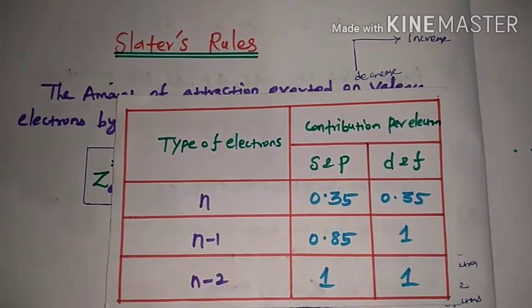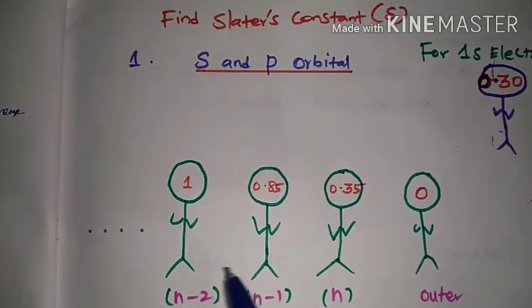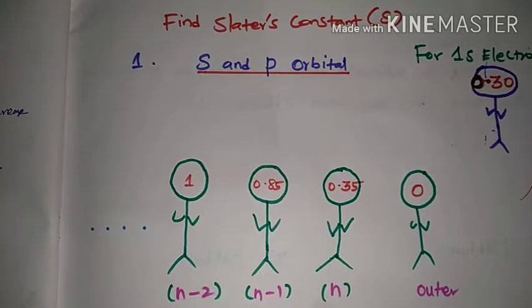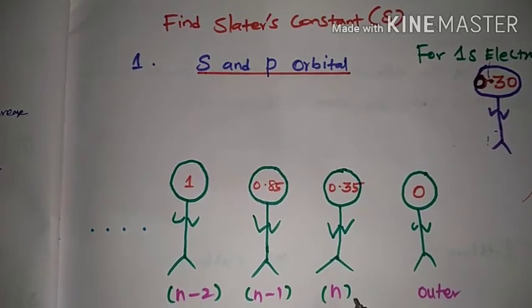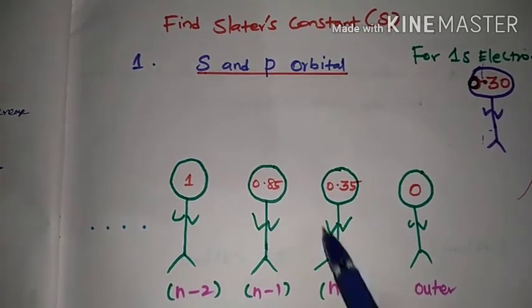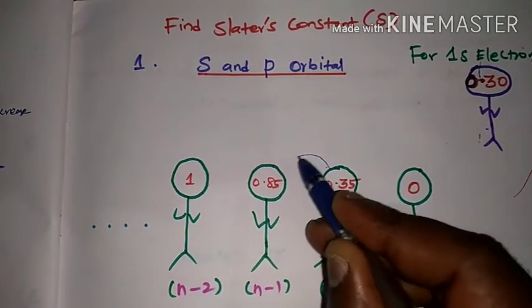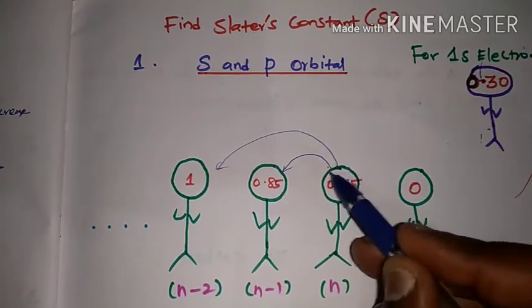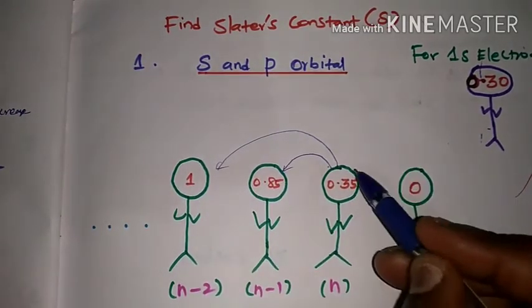For s and p orbitals, we will calculate the effective nuclear charge for 4s or 3d orbitals. For the chosen orbital, the value is 0.35. The immediate inside shell (n-1) has a value of 0.85, and further inside (n-2) the value is 1.